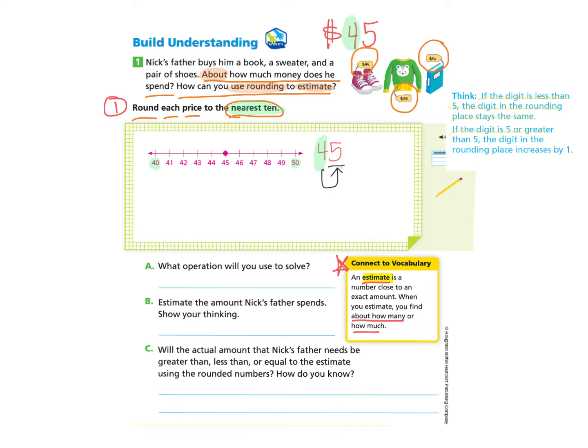And if the digit is 5 or greater than 5, the digit in the rounding place increases by 1. I see that the digit is 5, and so then the digit in the rounding place, which is 4, will increase by 1. So we can say that 45 rounds to 50.